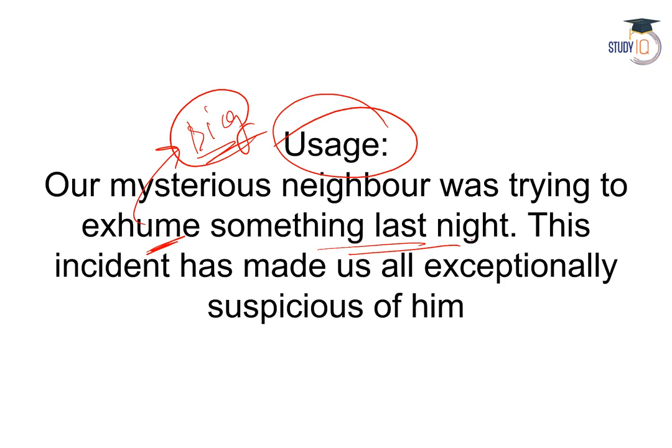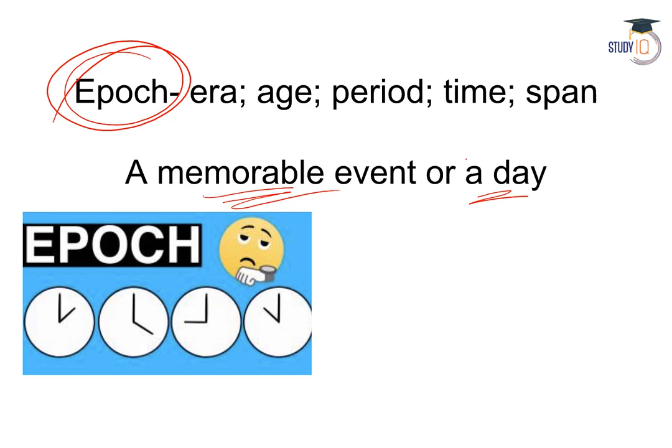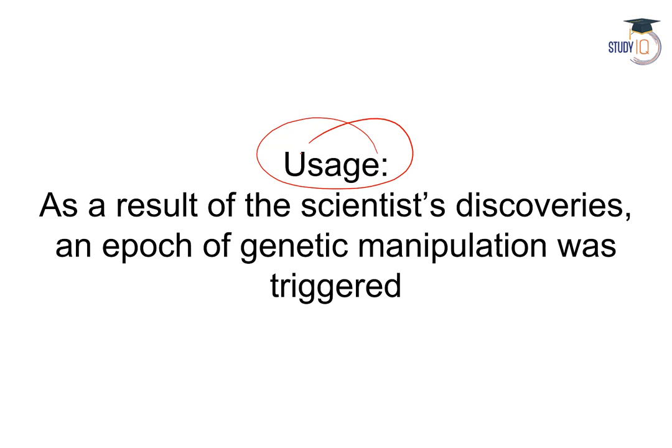Epoch ka arth hota hai — a memorable event, a period, a time span, an era, or an age. Epoch is a significant period in time. Usage: As a result of the scientist's discoveries, an epoch of genetic manipulation was triggered.